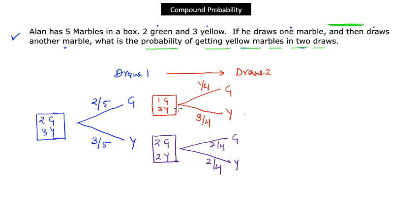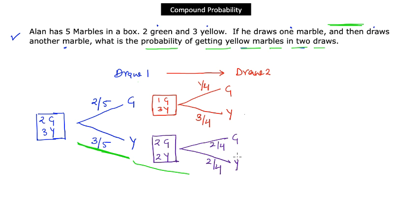We are interested in the probability of getting yellow in both draws. There is a clear dependency: what happens in the first event impacts the result of the second. The desired path is yellow on draw one followed by yellow on draw two, so we follow that specific branch of the diagram.